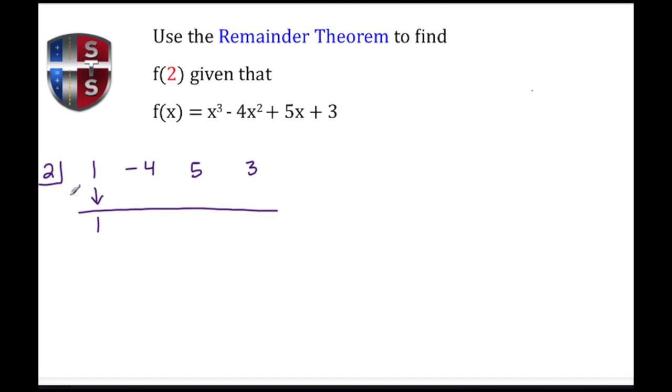And then begin to multiply. 2 times 1 gives me 2. Negative 4 plus 2 gives me negative 2. 2 times negative 2 gives me negative 4. 5 minus negative 4 gives me 1. And then 2 times 1 gives me 2.